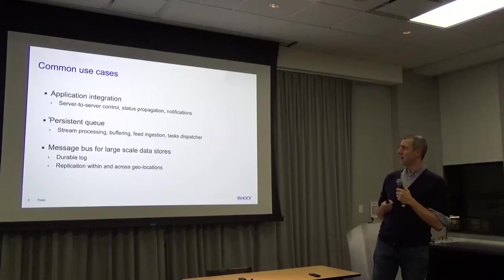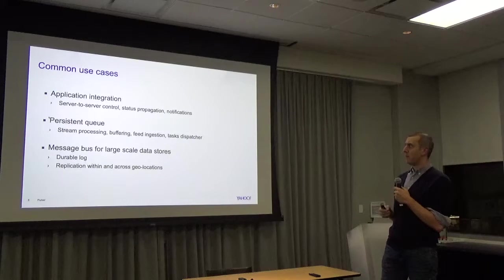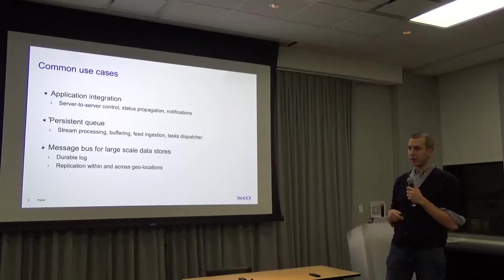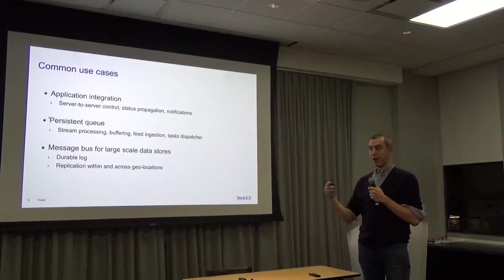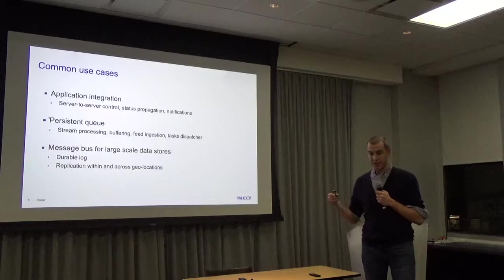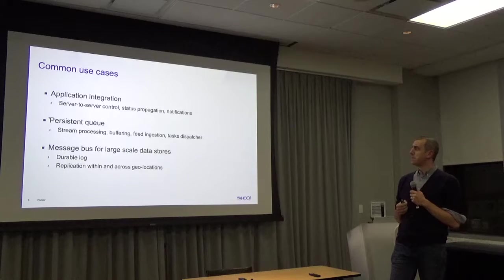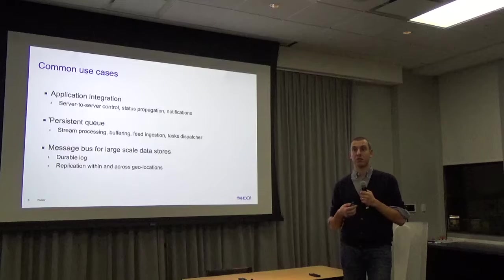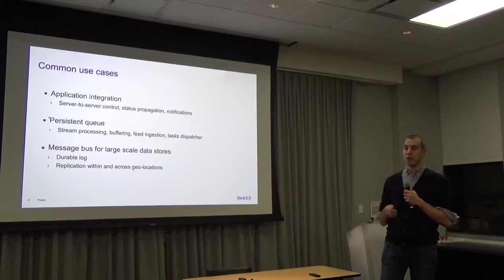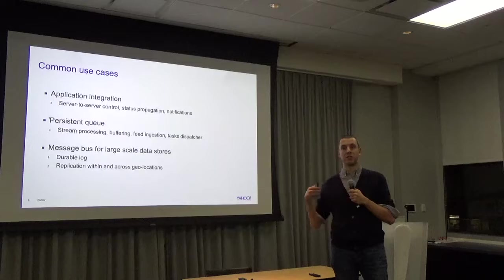To give a glance of what our users are using this system for: we have many server-to-server control feedback use cases, like reporting status back and issuing notifications — essentially having this feedback loop across all servers. For more throughput-intensive cases, we have a lot of stream processing using Storm, where pipelines read from a topic and publish results back into another topic.